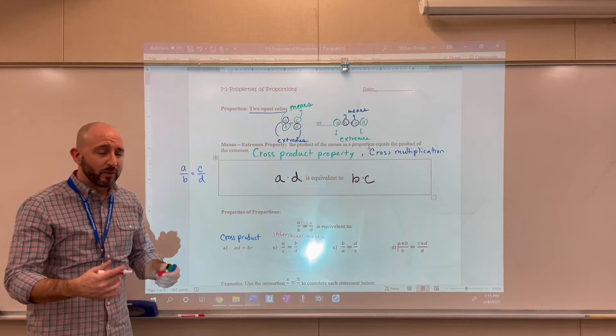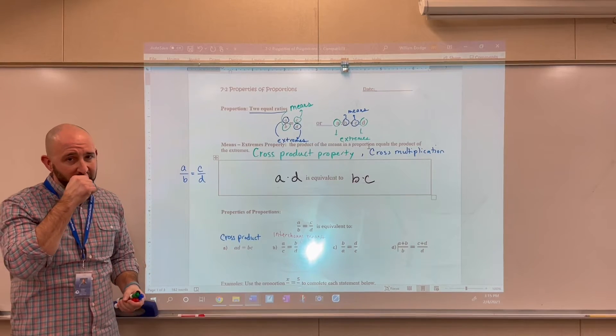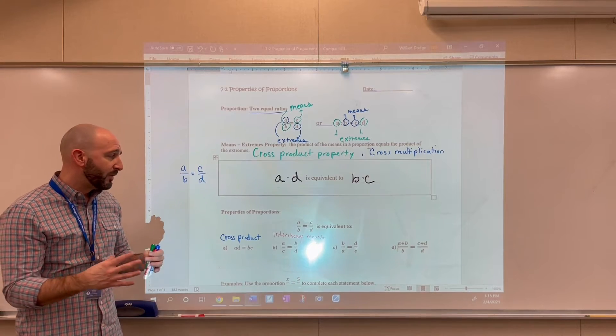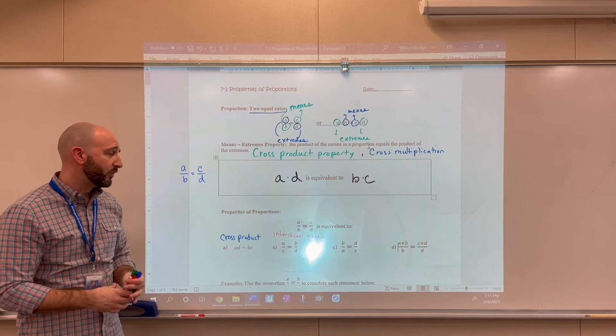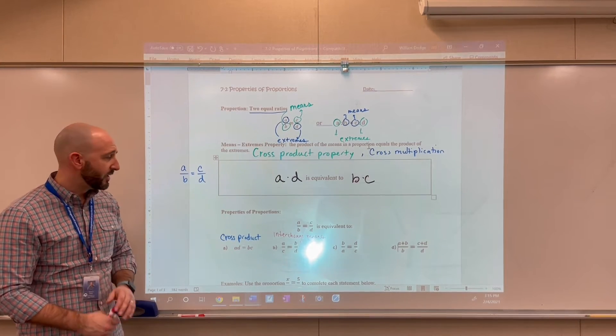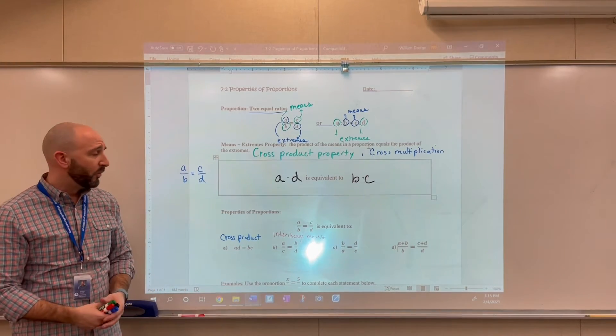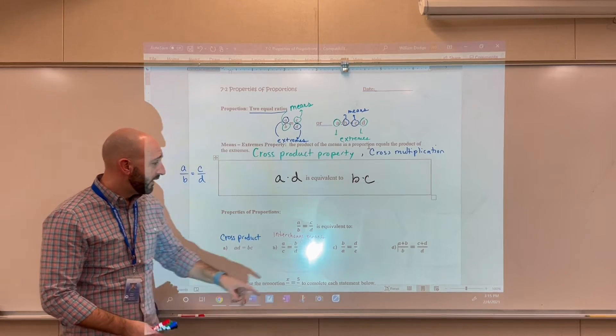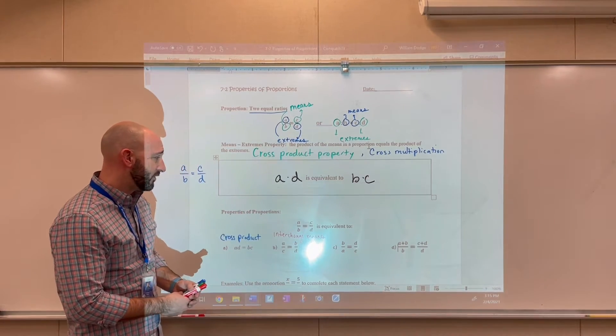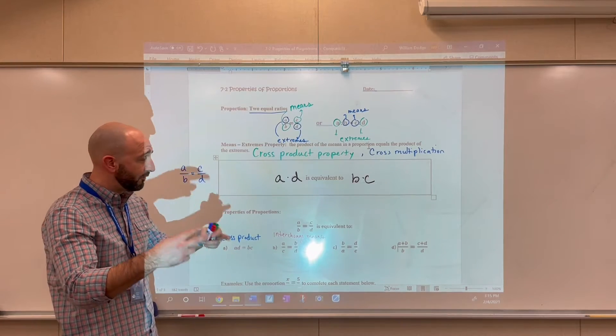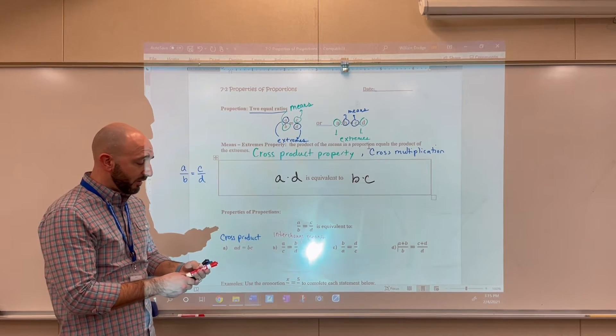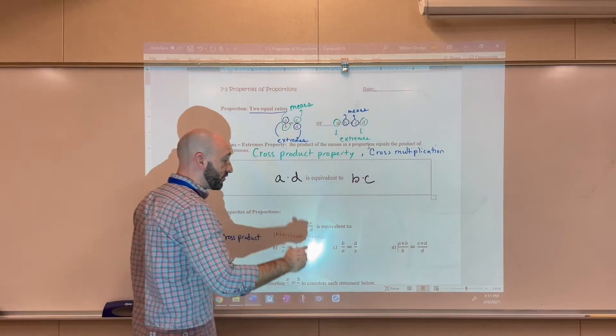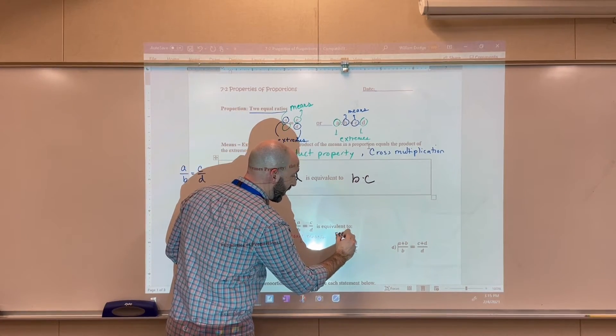And I'd like to spend some time going through proofs of these, but I want to try to keep these videos as condensed as possible. So maybe I can link some videos or some notes where you see proofs of each of these properties. So we can interchange the means, and those proportions are going to remain equivalent. Here, this is just the reciprocal property. So we can flip both sides of the proportion. And it's going to remain a true statement. So this is the reciprocal property.